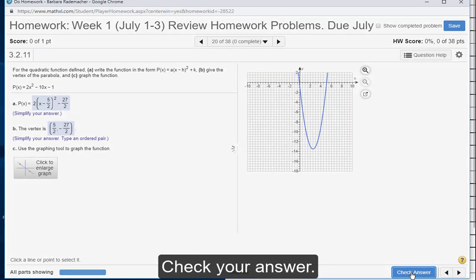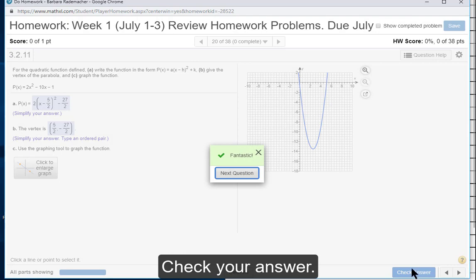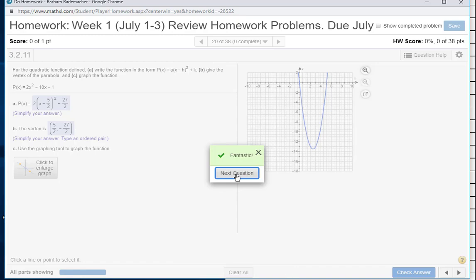But when I clicked on the vertex, it was at negative 13.5. Now the other point, you need one other point and that other point is the easiest one is the y-intercept, which is the c number.